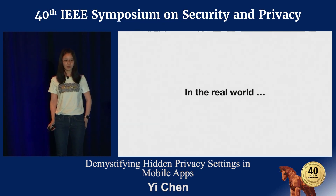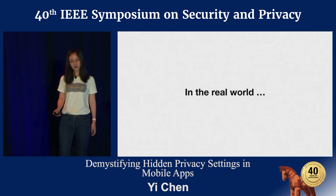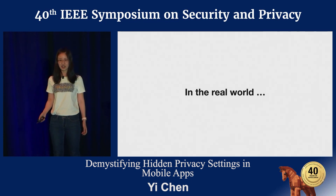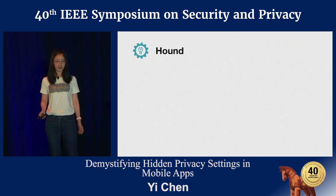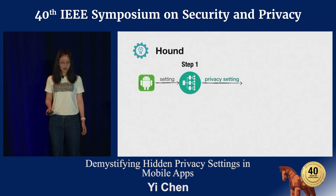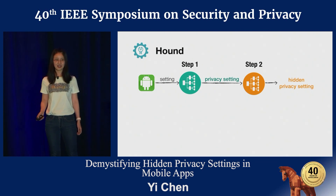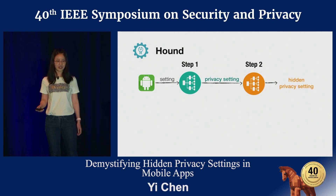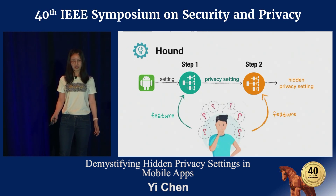Next, we wanted to understand how seriously hidden privacy settings occur in the real world. To discover hidden privacy settings from a large number of real-world apps, we designed an automatic tool named Hound. The high-level design of Hound has two steps: first, extract privacy settings from an app; second, identify hidden privacy settings from those settings. Each step contains a key classifier. Extracting settings from an app can already be done by existing work such as SUPER, so the key challenge of Hound is how to design suitable features for the two classifiers.